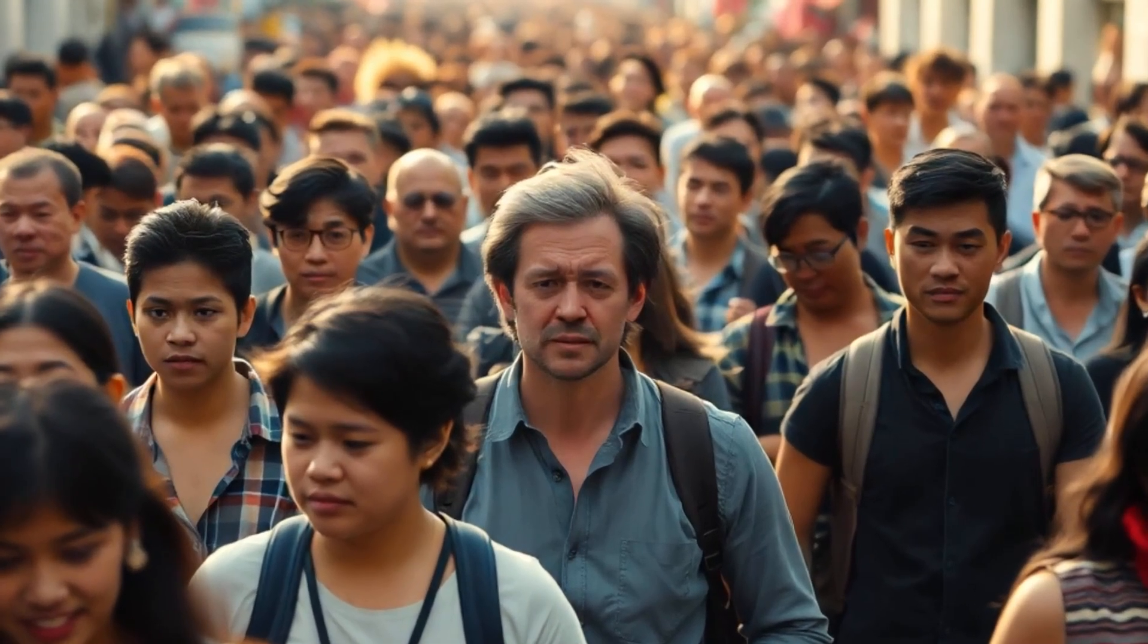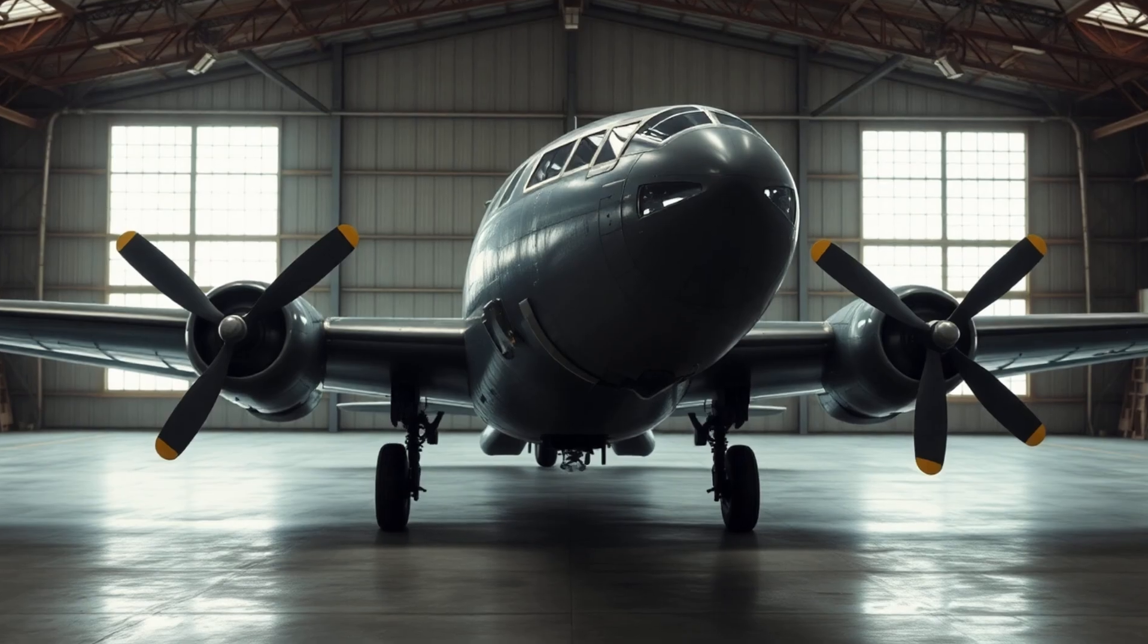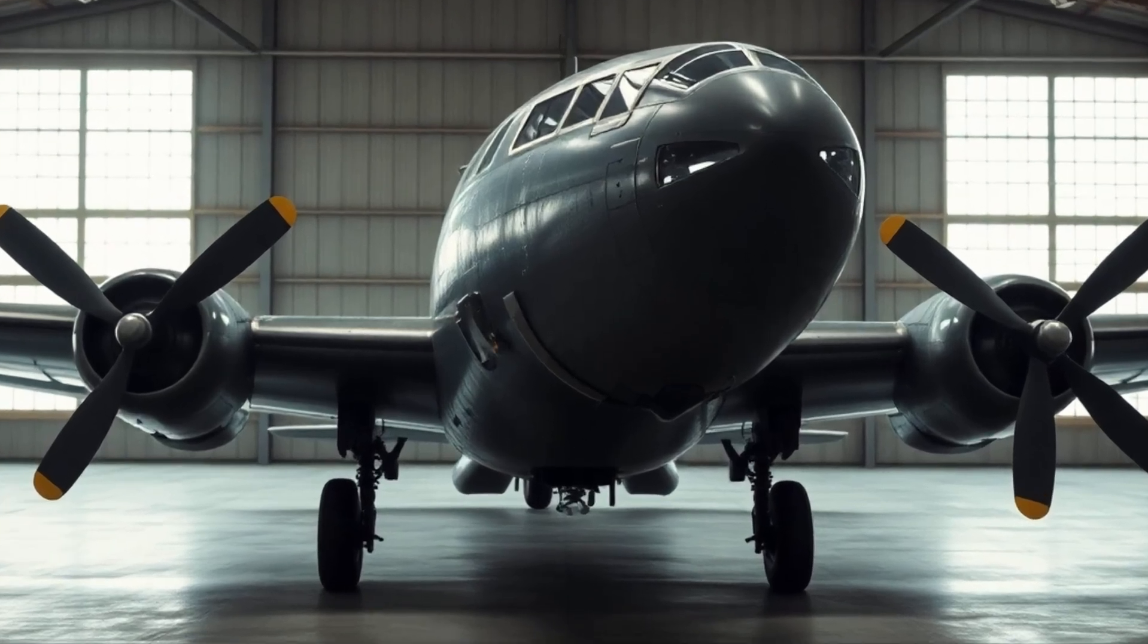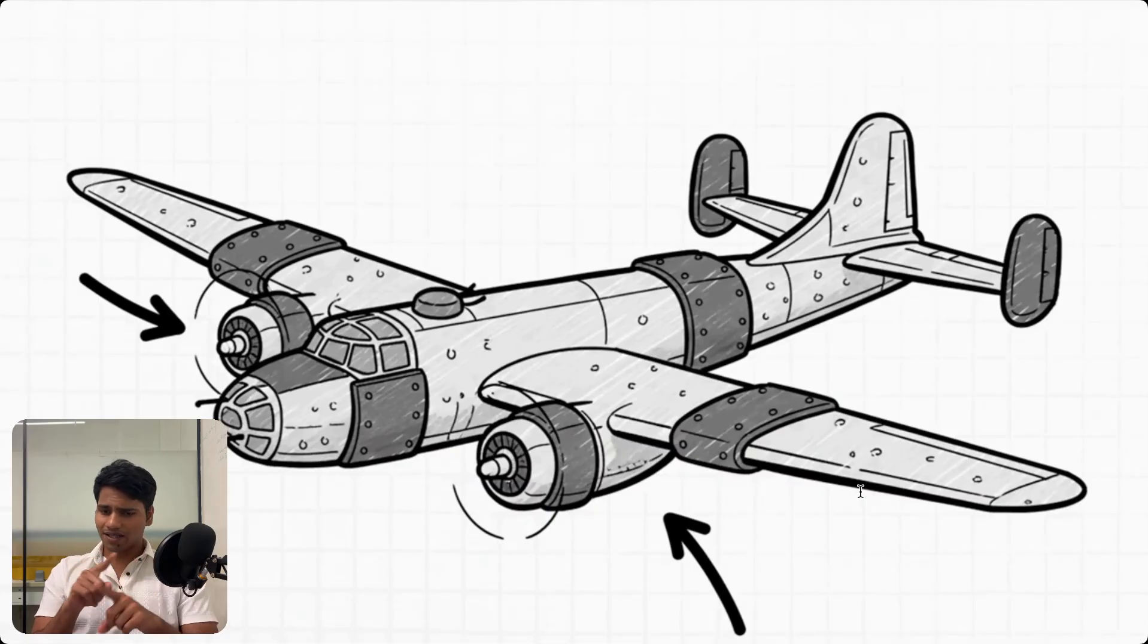Let's end this video with a classic brain teaser. During World War II, the military studied the bombers that came back from missions. They mapped out where all the bullet holes were to figure out where they needed to add more armor. So looking at the data, where do they put this extra plating? The answer is completely counterintuitive: you add armor to the places where there are no bullet holes at all.